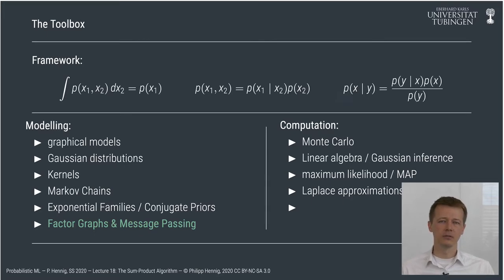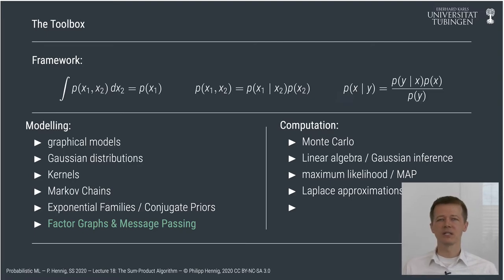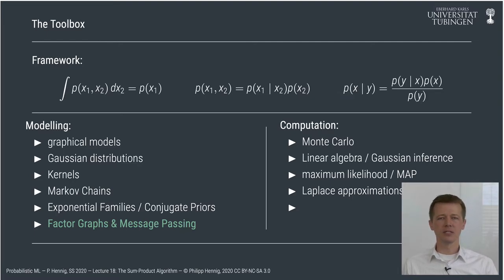Right at the very beginning of the course in lecture two, we discovered that one way to reduce the computational cost of inference was to use conditional independence structure—the observation that certain variables, if they are known, separate parts of the space of latent unknown hypotheses from each other so that the computational steps factorize into individual parts. We saw that there is a graphical way of visualizing this structure in our generative processes, called graphical models.